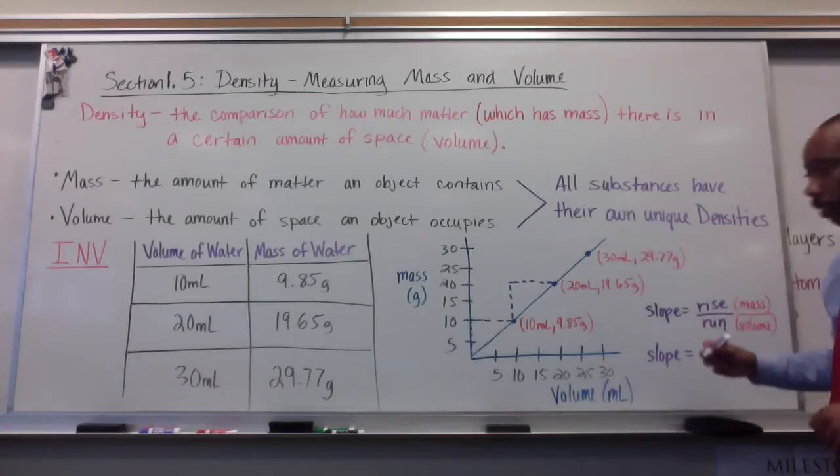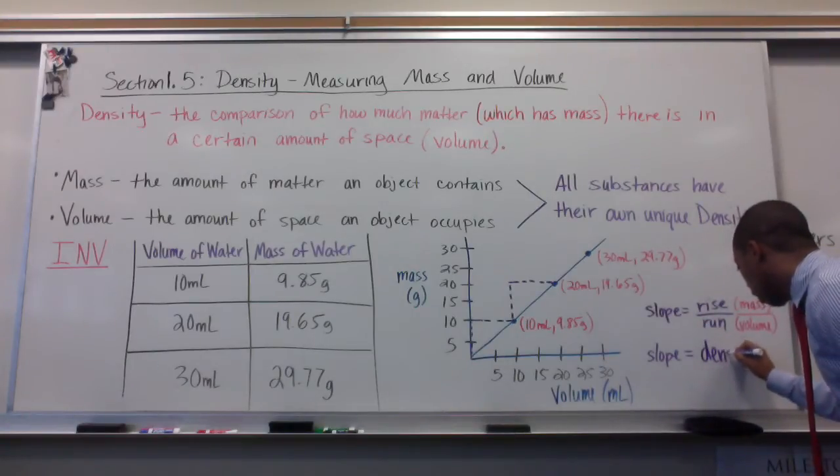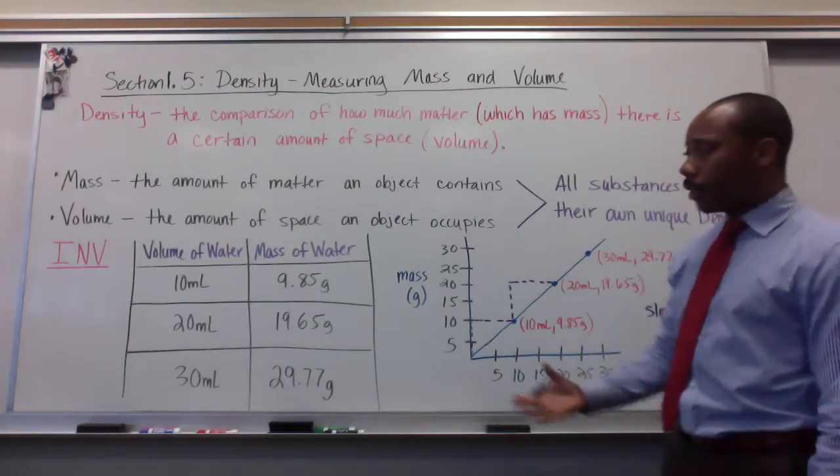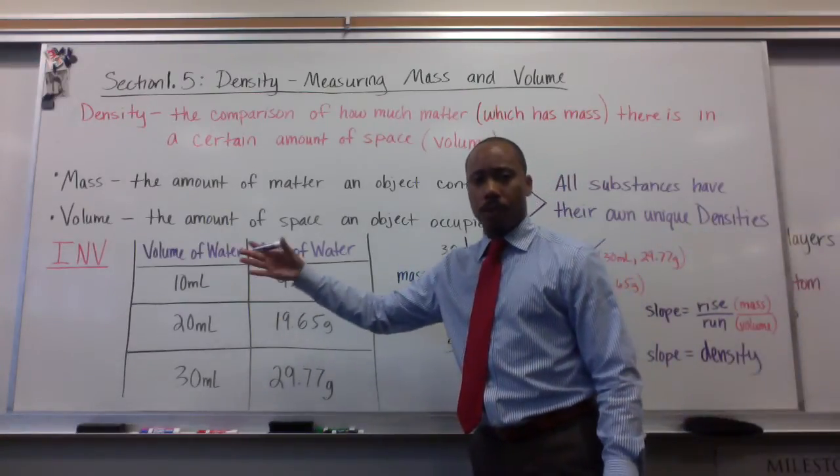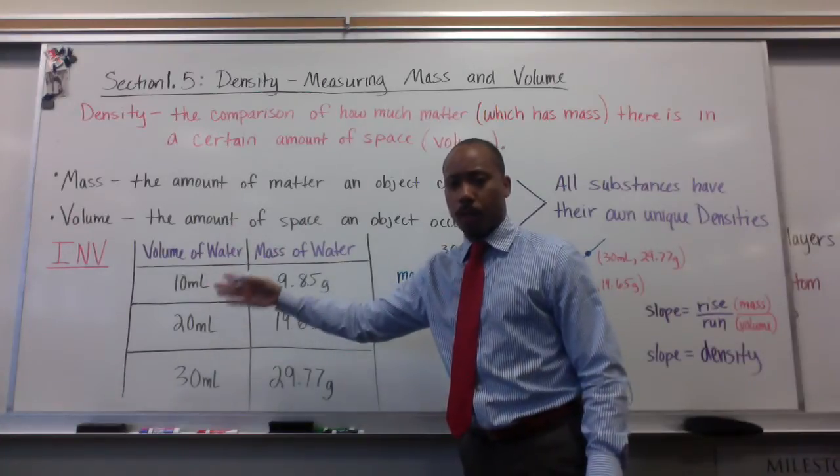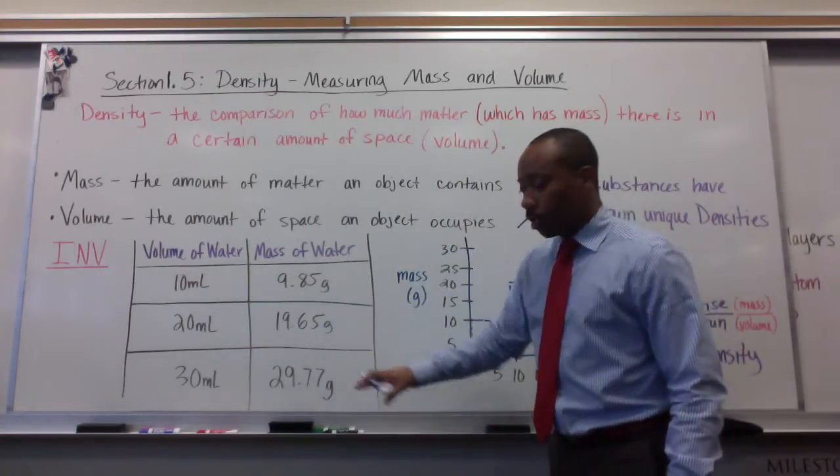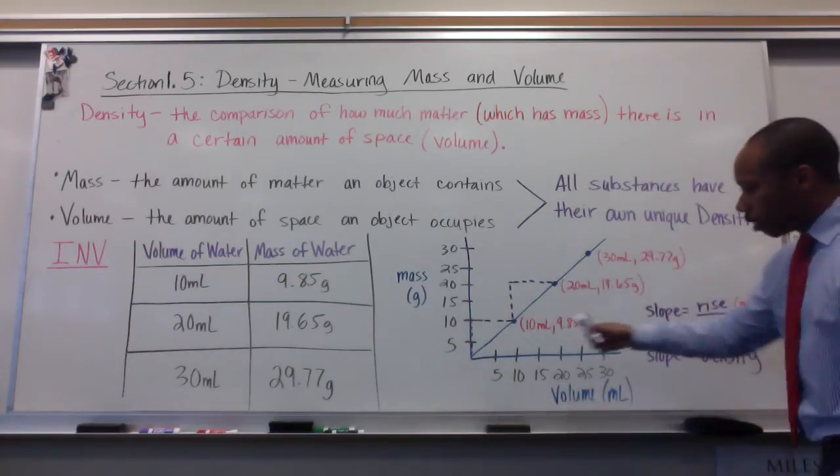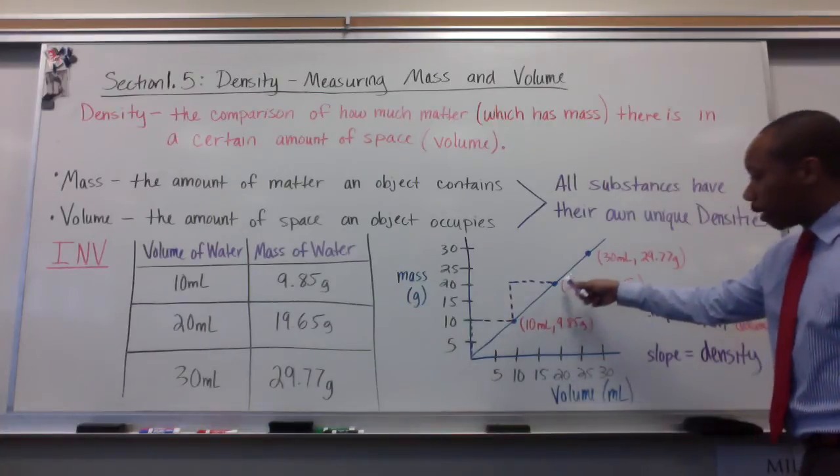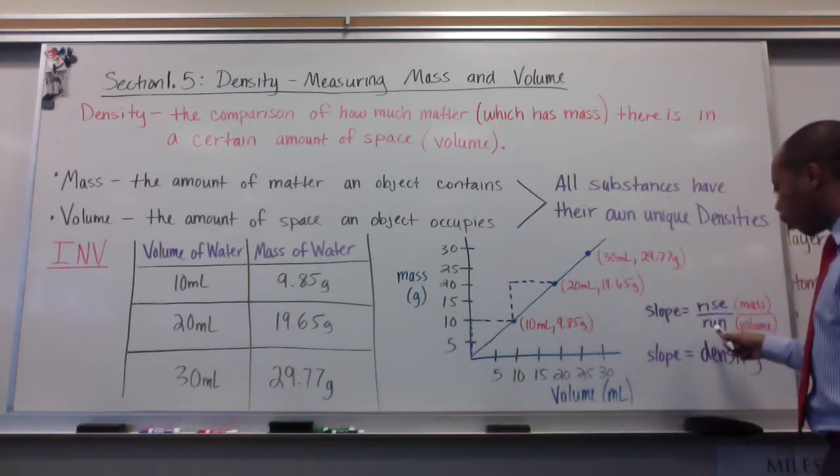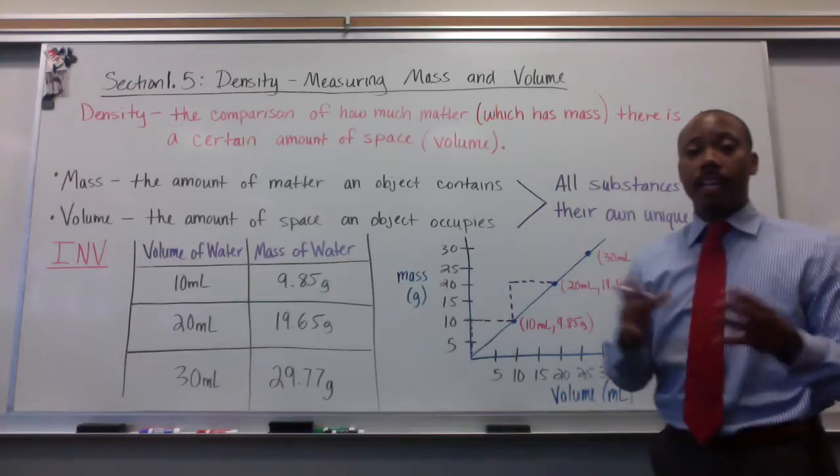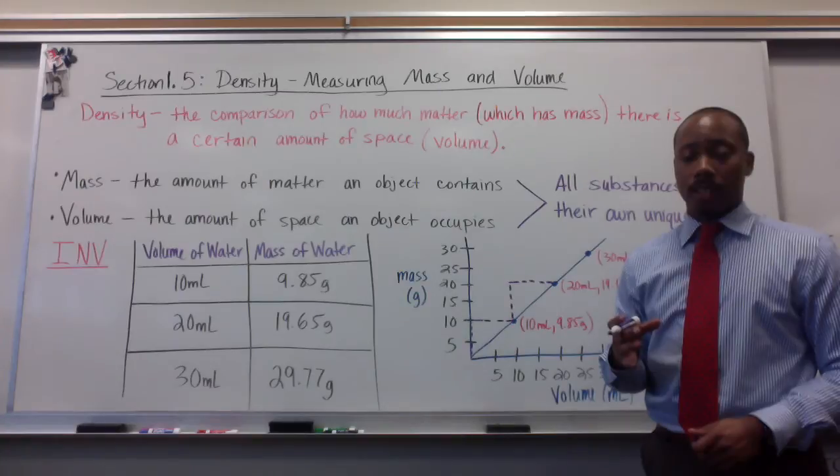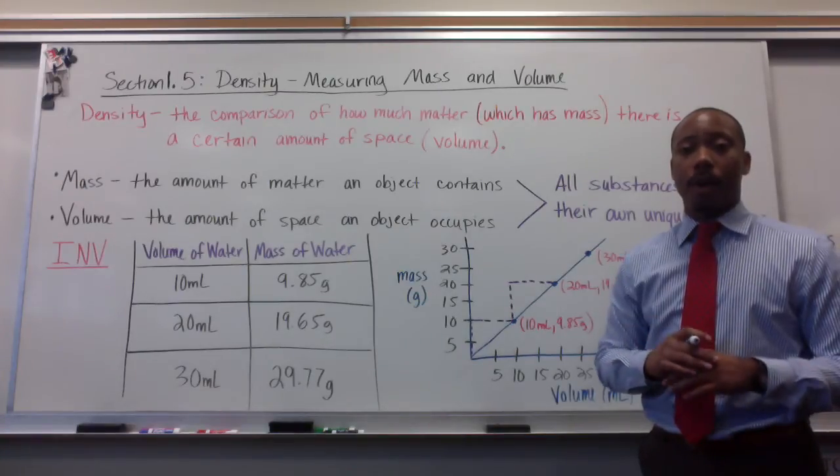The slope is equal to the mass over the volume. The slope is equal to the density. This is important because we have different data points here. We have a volume of 10 milliliters, volume of 20 milliliters, volume of 30 milliliters, and different masses for those volumes. But we still get a similar or the same slope here. This tells us that any amount of water, 10, 20, 30 milliliters, will have the same density. Water has the same density no matter the amount.